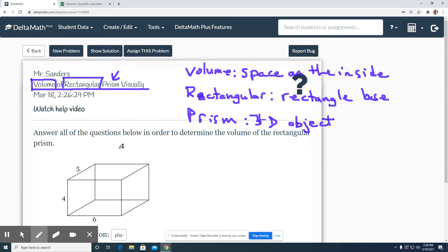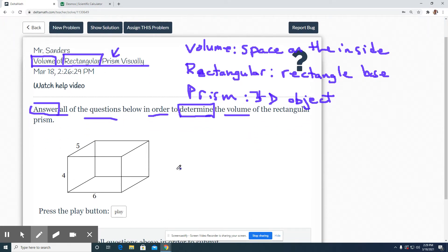So let's go ahead and put all these together and see what we got. We're asked to answer all of the questions in order to determine the volume, or the space on the inside, of this rectangular prism. It's a three-dimensional object with a rectangle on the bottom. If you notice, here's our rectangle on the bottom.